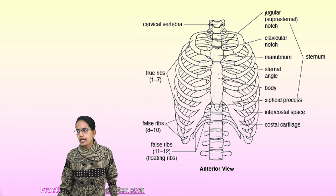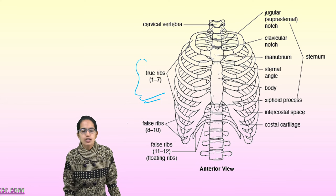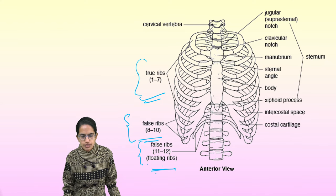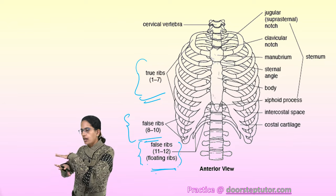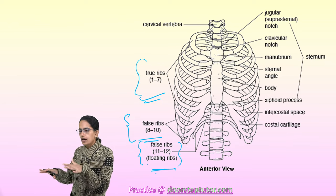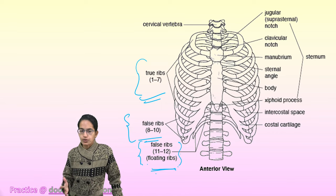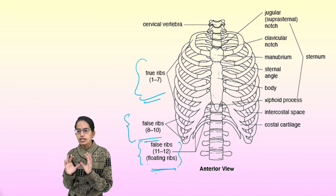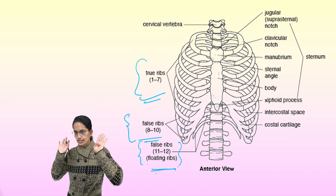Under thorax, ribs are found. The first seven pairs are called true ribs. The 8th to 10th pairs are called false ribs. The last two pairs are the floating ribs. The floating ribs help in the protection of the kidneys. The true ribs enclose the lungs and the heart, articulating with the thoracic vertebra towards the back and the sternum towards the front.